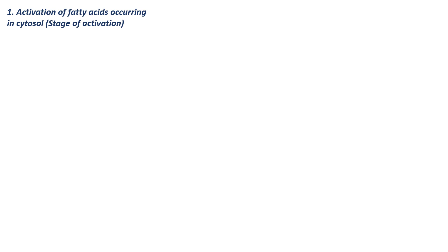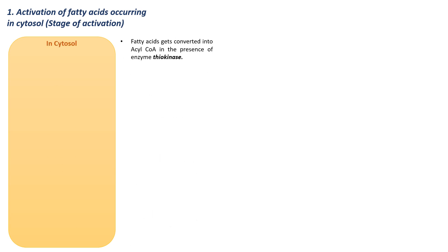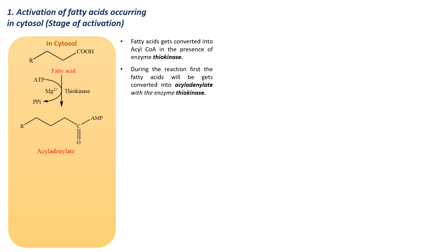In the stage of activation, let us imagine this box as the cytosolic matrix. In the cytosolic matrix, fatty acids get converted into acyl coenzyme A in the presence of the enzyme thiokinase. In the first step, the fatty acid undergoes reaction and is converted into acyl adenylate. During this reaction, ATP is utilized and converted into pyrophosphate (PPi) with the help of Mg2+.